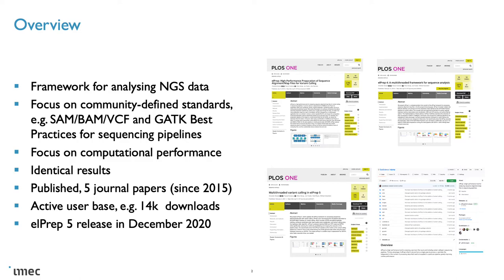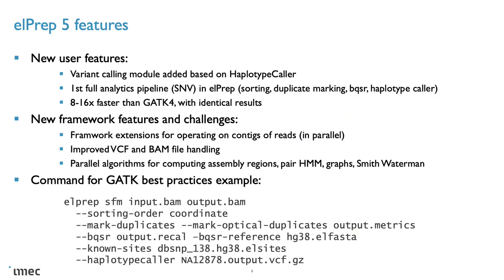The latest version of Lprep, Lprep5, was released in December 2020. The main new feature of Lprep5 is the introduction of variant calling based on the haplotype caller algorithm from GATK4. This means Lprep can now execute the full pipeline as described by the GATK best practices for variant calling. We see that our implementation is between 8 and 16 times faster than GATK4 while producing identical results. Implementing variant calling in Lprep5 was challenging as we had to make multiple extensions to the framework and come up with new parallel algorithms for implementing the different phases of the haplotype caller algorithm while producing identical results to GATK4.